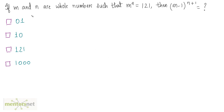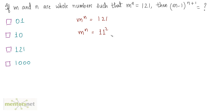Now let us jump to question number 2. If m and n are whole numbers such that m raised to n is equal to 121, then what is the value of this expression? We know m raised to n is equal to 121. Now, 121 is the square of 11, so I can write 11 squared is equal to m raised to n. Therefore m is 11 and n is 2.